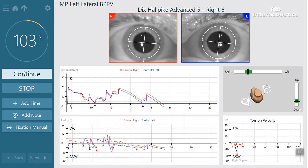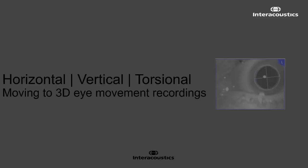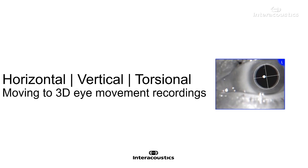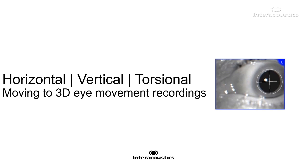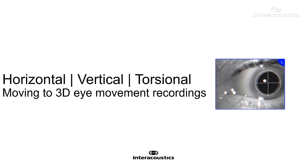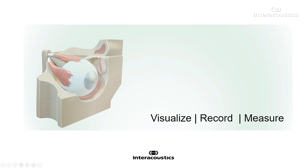Now let's address the issue of relying on horizontal and vertical eye traces when the nystagmus elicited by posterior canal BPPV is actually torsional in nature. The third generation of Visualize has the added advantage of torsional eye tracking. With this torsional tracking algorithm developed by Johns Hopkins, we are able to visualize the torsional components of the eye movement, as well as measure and extract the torsional velocity for each identified bead of nystagmus.